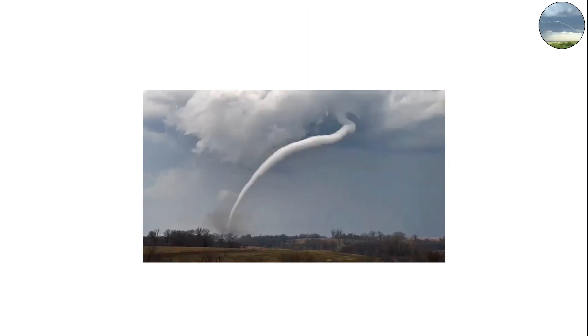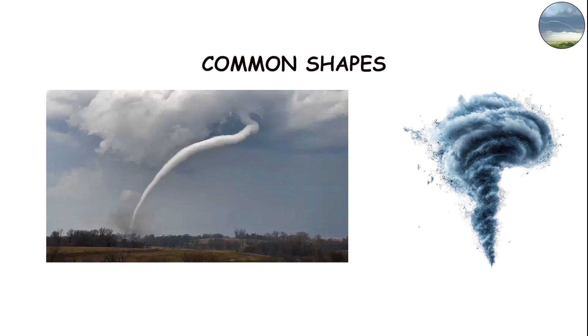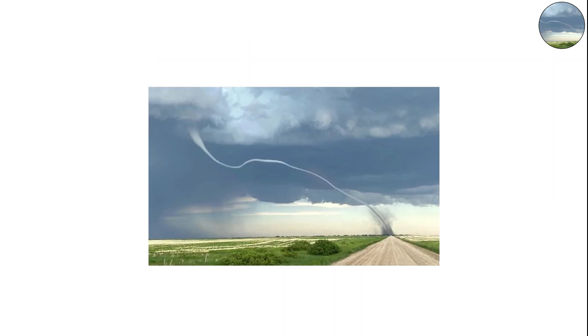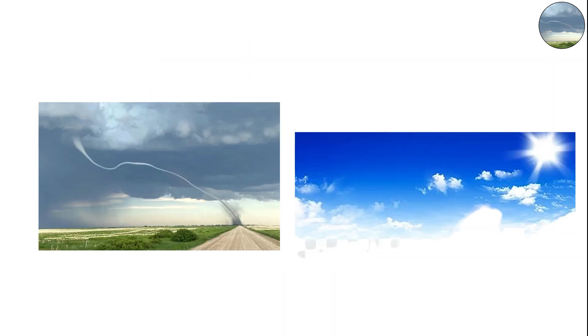Rope tornadoes — the beginning and the end. Rope tornadoes are the most common shape you'll see in tornado footage. They're long, narrow, and look like a twisting rope dangling from the sky.